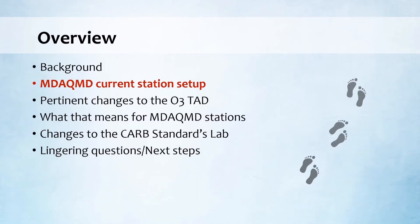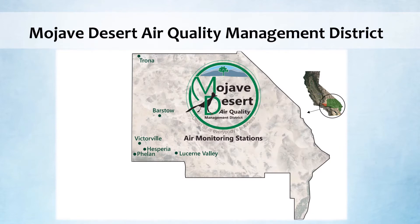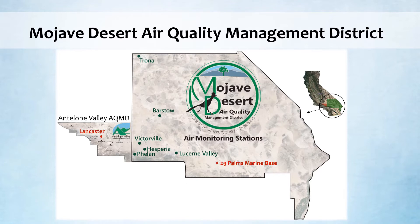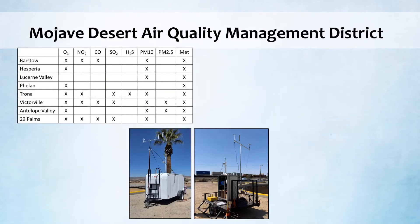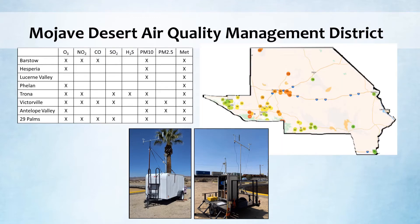That brings me to my next topic: the Mojave Desert AQMD current station setup. I work for the Mojave Desert Air Quality Management District. We are the second largest district in the state at just under 20,000 square miles. We run six regulatory stations plus two contract stations — one for the Antelope Valley AQMD, which is a regulatory site, and one at the 29 Palms Marine Base, which is not a regulatory site. Across these eight sites, we measure all of the criteria gases plus H2S, continuous PM10 and PM2.5, and MET, making a total of six regulatory ozone analyzers plus the one at 29 Palms. We also have two stations for mobile smoke monitoring and have deployed around 50 purple air sensors across the two districts. We have three techs to keep all this going, so we stay pretty busy.